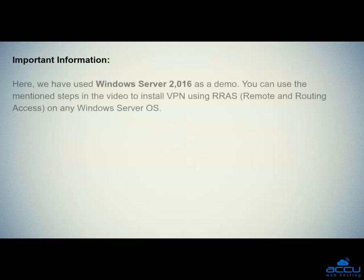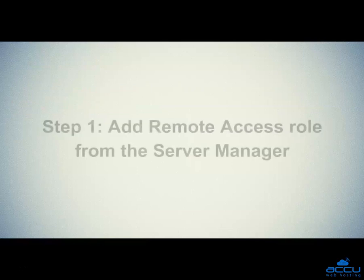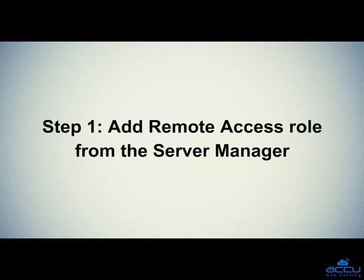Important information: here we have used Windows Server 2016 as a demo. You can use the mentioned steps in the video to install VPN using RRAS Remote and Routing Access on any Windows Server OS. Let's see the steps in detail. Step 1: Add remote access role from the server manager.